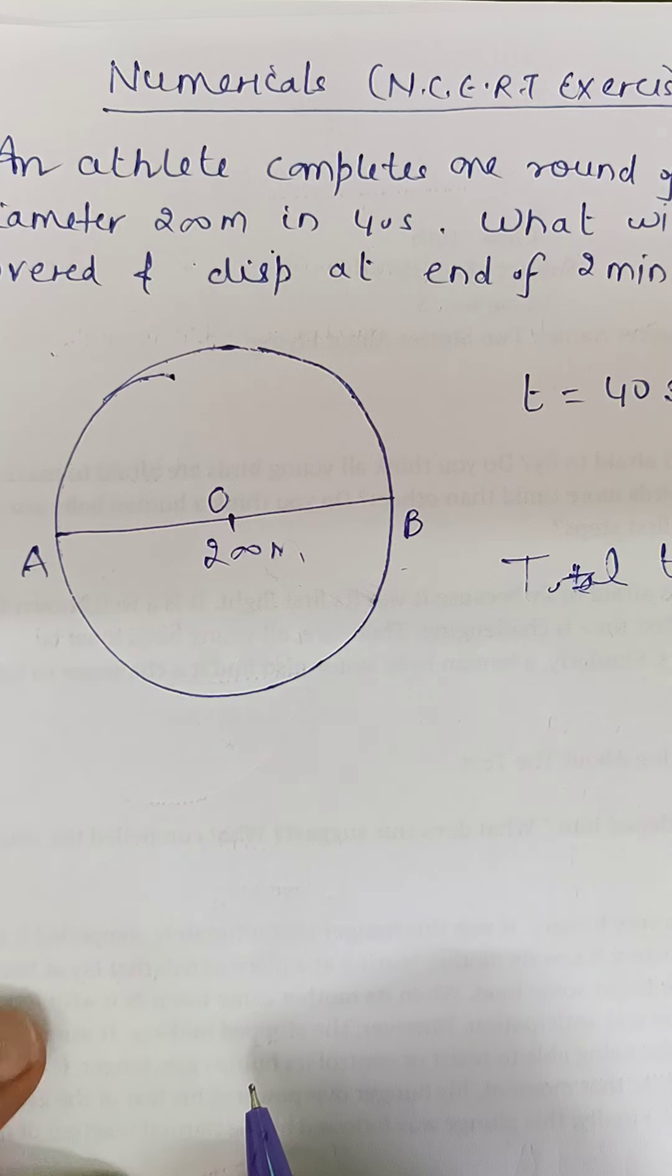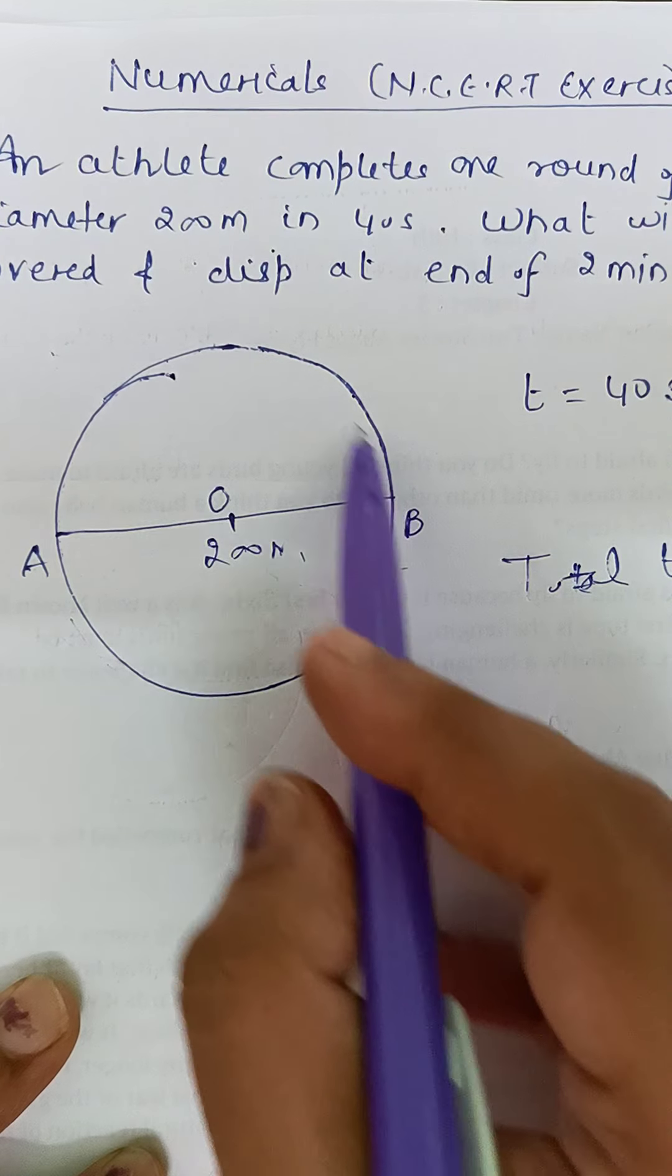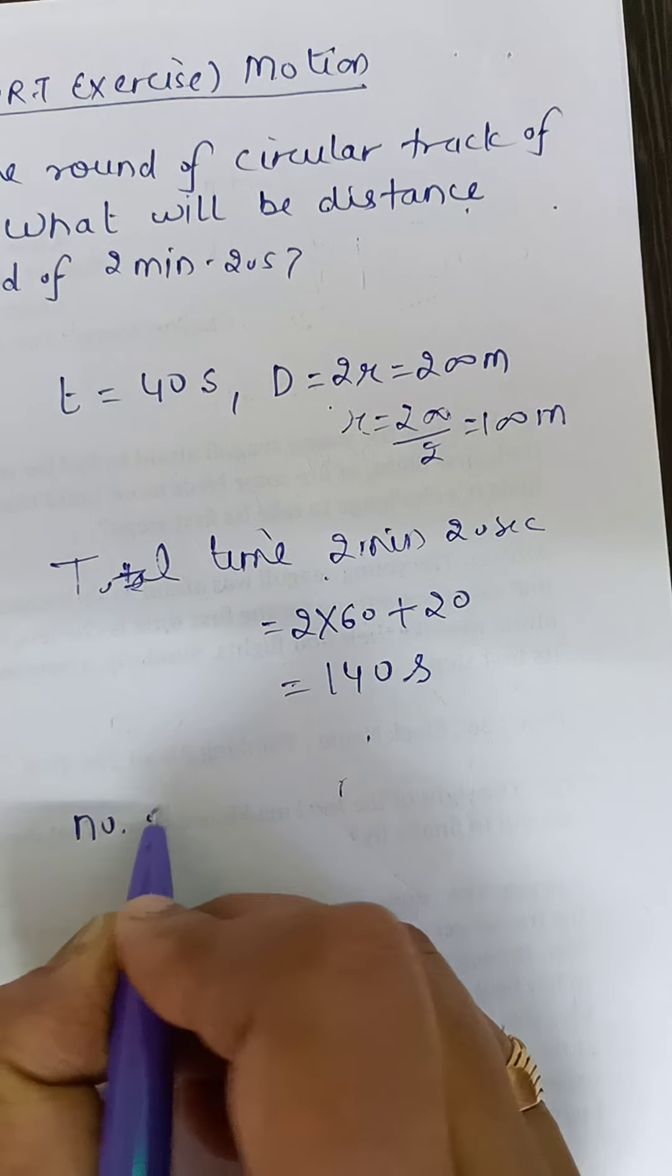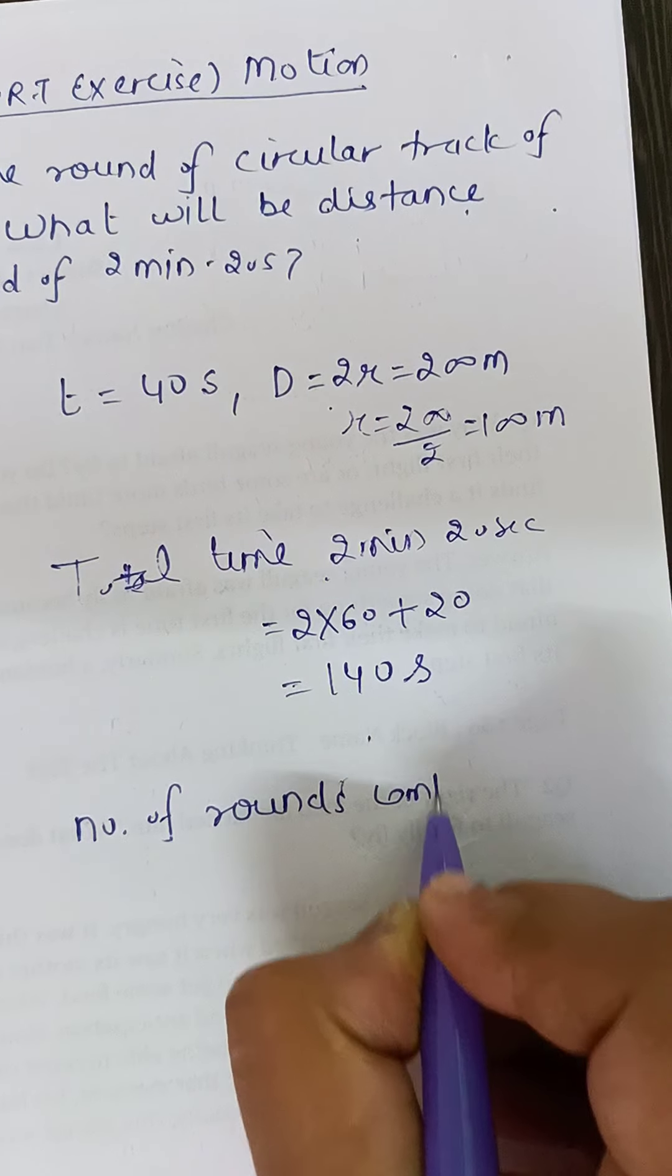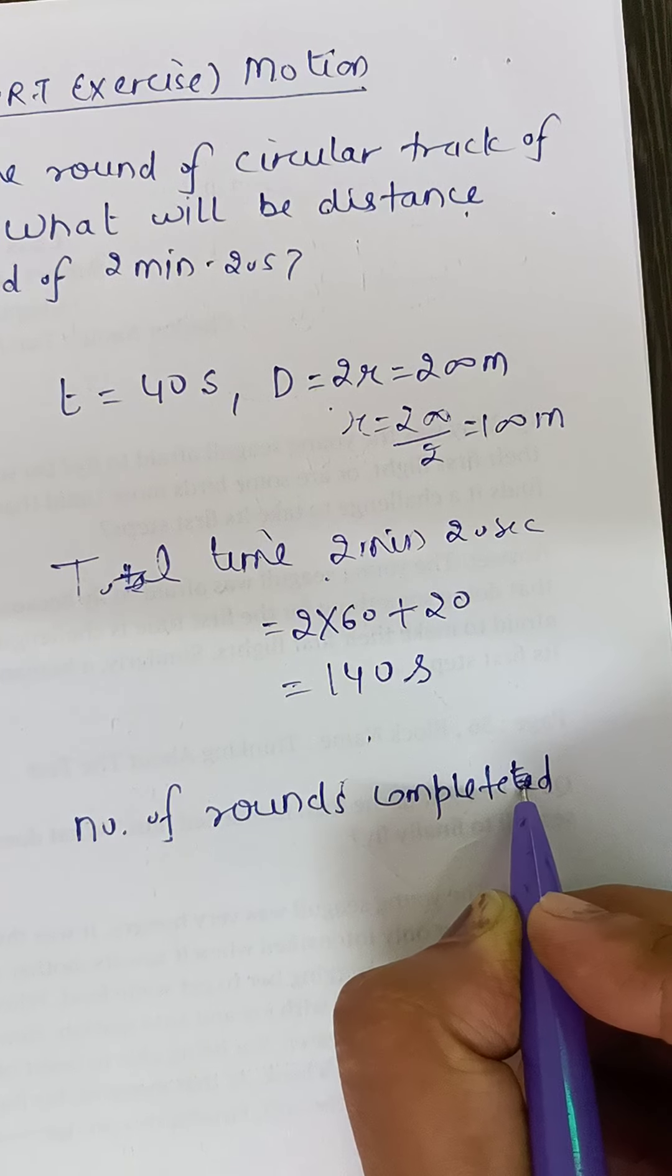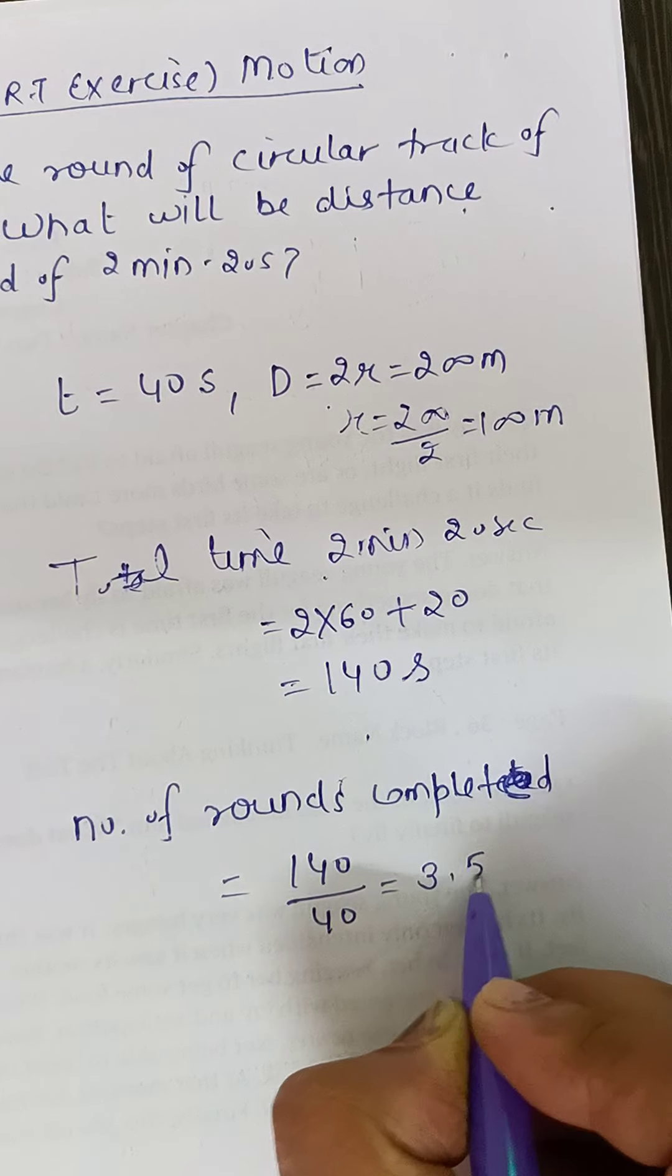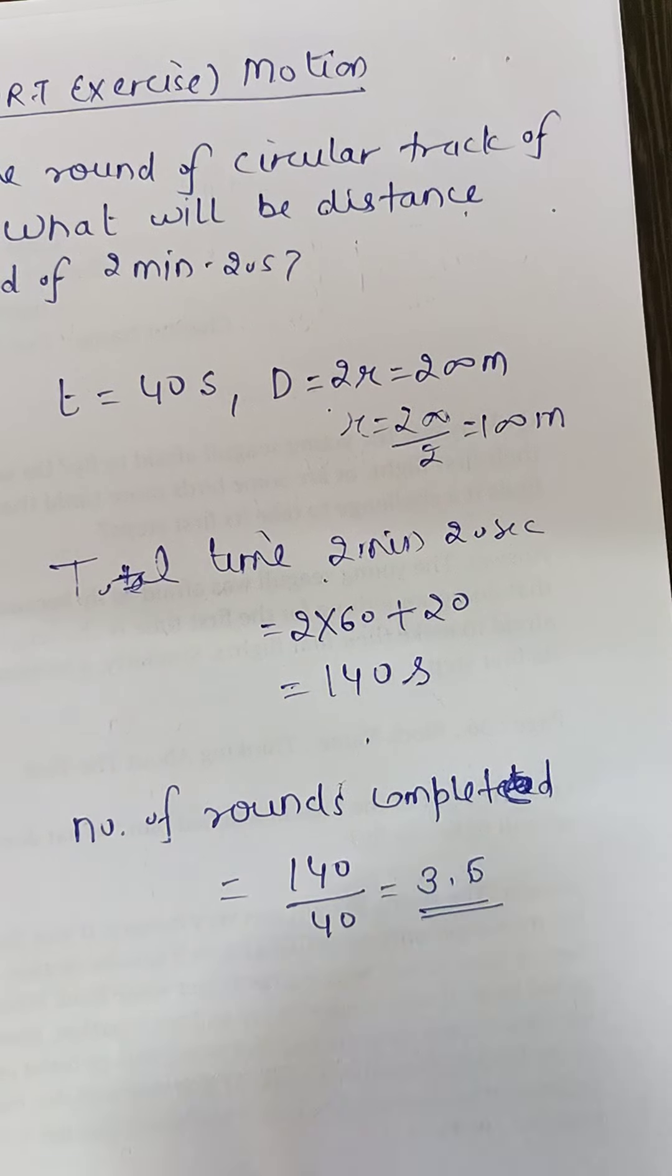Total time is 140 seconds. Now see in 140 seconds on circular track how many rounds can happen? Since 40 seconds is one round, so we check multiples of 40: 80 seconds is 2 rounds, 120 seconds is 3 rounds, then 20 seconds remain. To calculate this, number of rounds completed will be total time divided by time for one round. When you solve, it will come out to be 3.5 rounds.